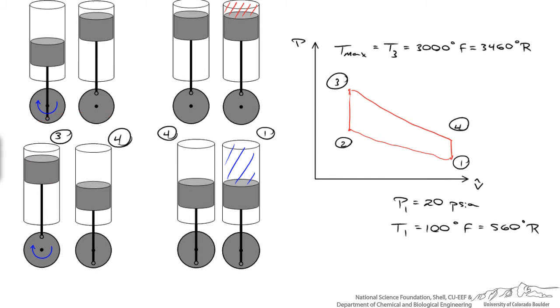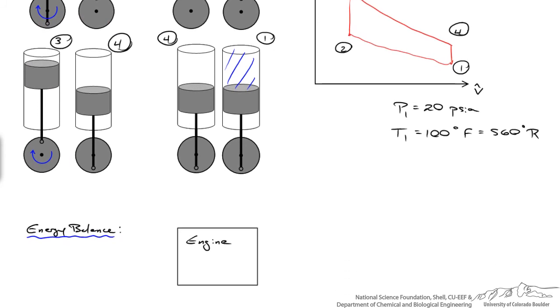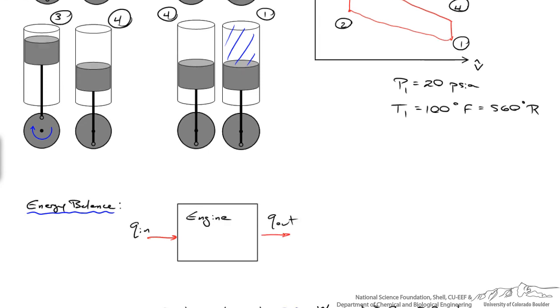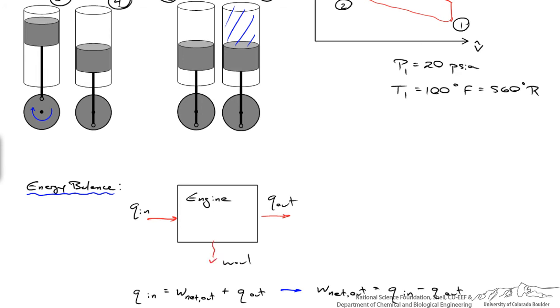So if we do an energy balance on the system, and I'm just drawing a block for the engine. We've got heat entering the system, so we've got Q in, and heat leaving the system, Q out. And we've got a net amount of work leaving the system. So the energy balance shows that the amount of heat entering the system has to equal the amount of work leaving the system plus the amount of heat leaving the system. So all the energy in has got to equal all of the energy out. We'll solve for the net amount of work leaving the system is simply the difference between Q in and Q out.